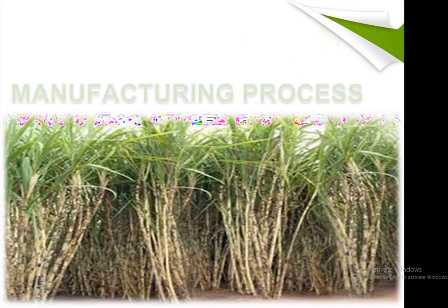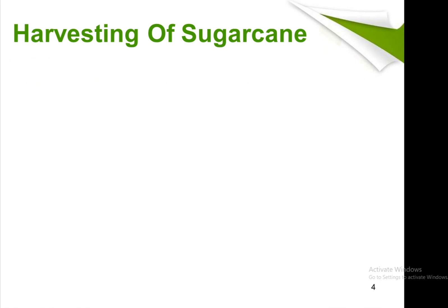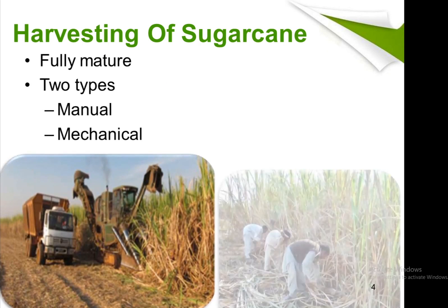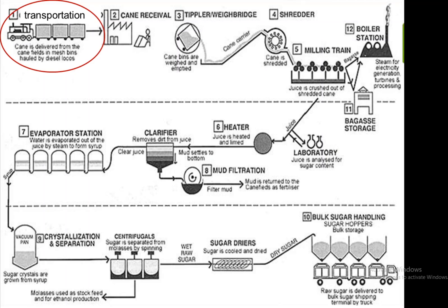The first step in the manufacturing process of sugar is harvesting of sugarcane. In harvesting, we first want fully mature sugarcane. There are two types of harvesting: manual and mechanical. In manual harvesting, manpower is used, and in mechanical harvesting, machinery is used. This is the overall flow diagram of the manufacturing process of sugar.